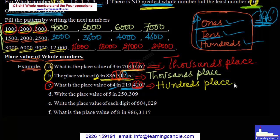Example D: write the place value of five. The place value of five — the place value of five.